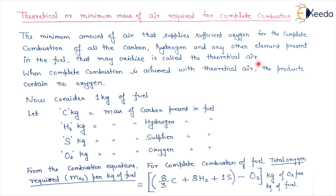There are constituents in the fuel like carbon, hydrogen, sulfur, and any other element that may be present. All these elements will oxidize in the presence of oxygen. When complete combustion is achieved with theoretical air, the product contains no oxygen. Now consider 1 kg of fuel. Let C kg be the mass of carbon, H₂ kg be the mass of hydrogen, S kg be the mass of sulfur, and O₂ kg be the mass of oxygen present in the fuel.